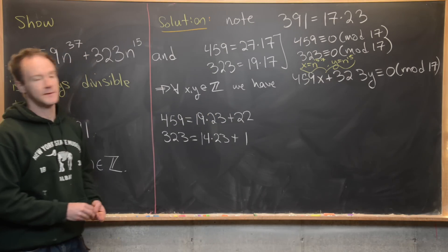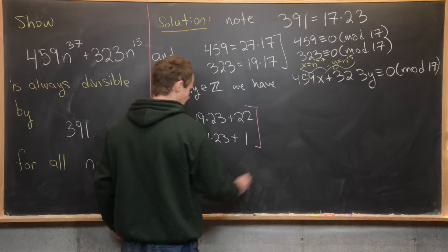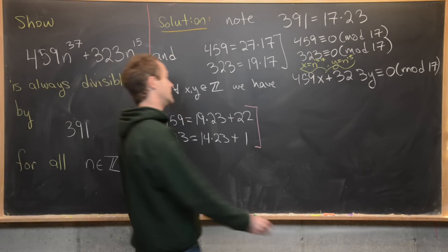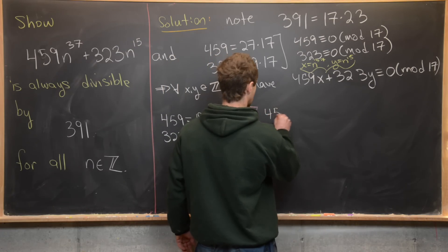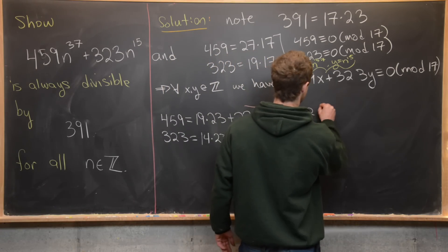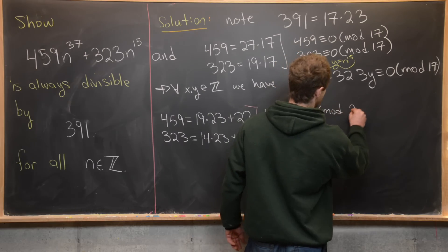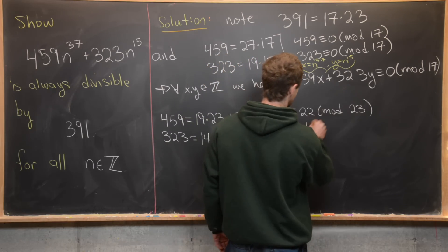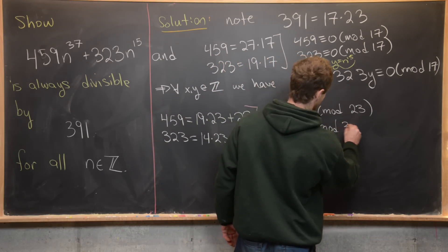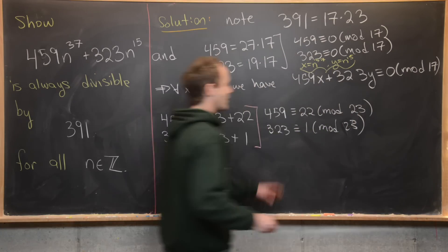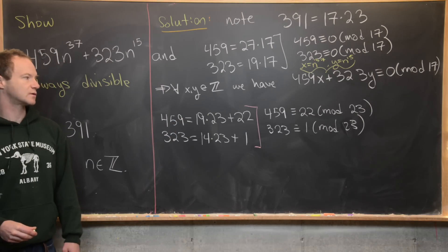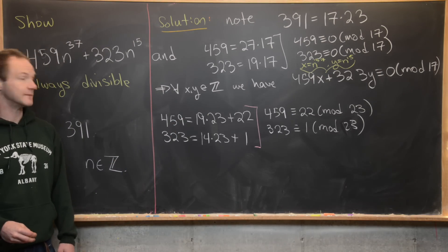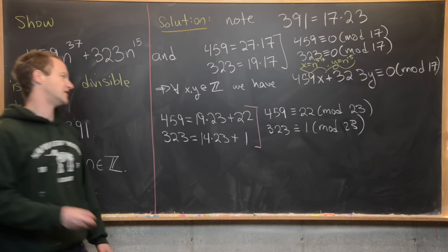Here we've got a remainder of 22. Here we've got a remainder of one. That means we can have a really nice reduction modulo 23. We have 459 is congruent to 22 mod 23, and 323 is congruent to 1 mod 23. Now you can probably see where we're going. Notice 22 plus 1 is just 23, but 23 is 0 mod 23. So we're actually about ready to finish it off.